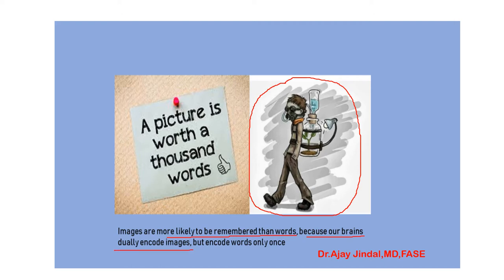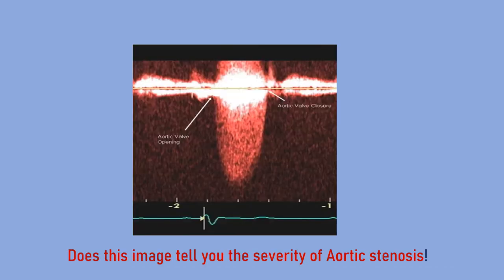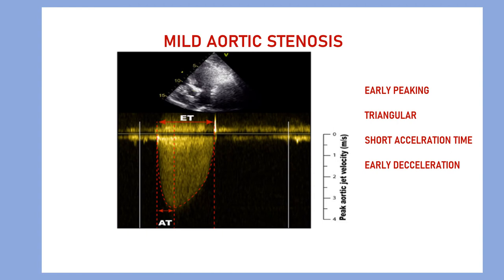We will start from the Doppler signals of the aortic valve. This is the continuous wave Doppler signal of the aortic valve — this is the aortic valve opening, this is the aortic valve closing, and this is the Doppler signal of the aortic valve. Now we will start with mild aortic stenosis.